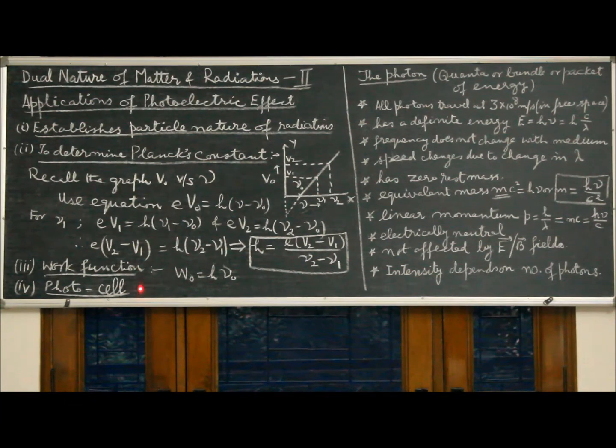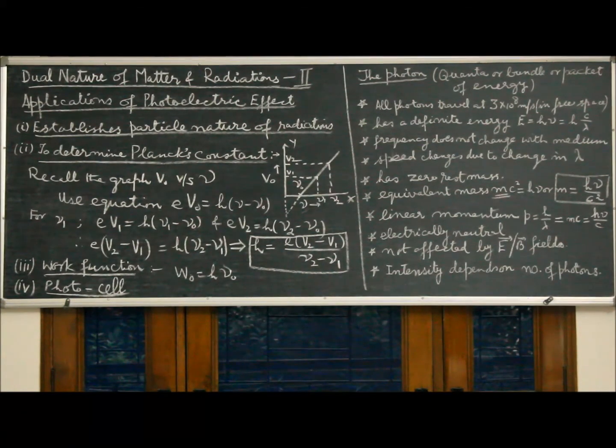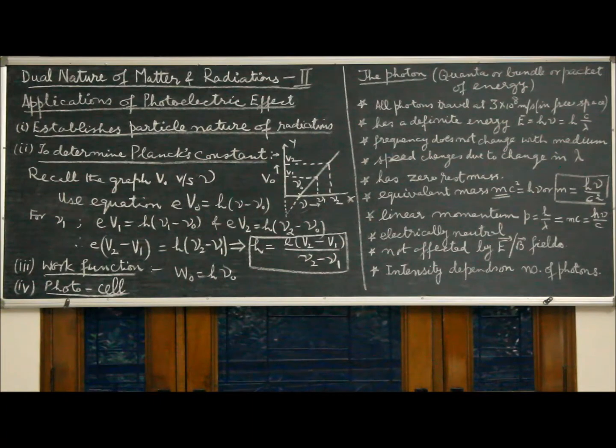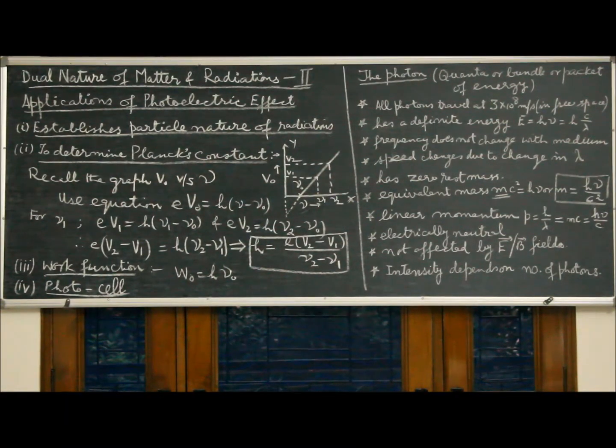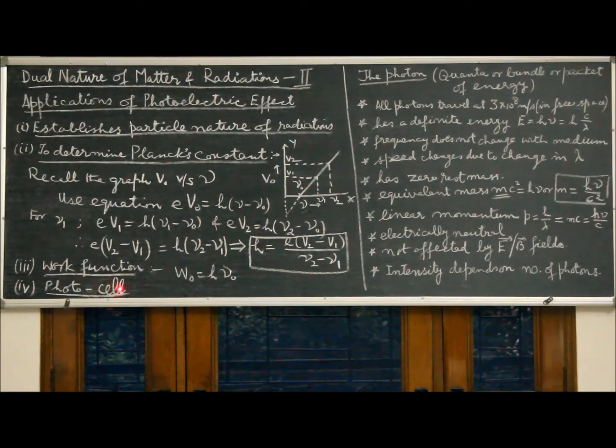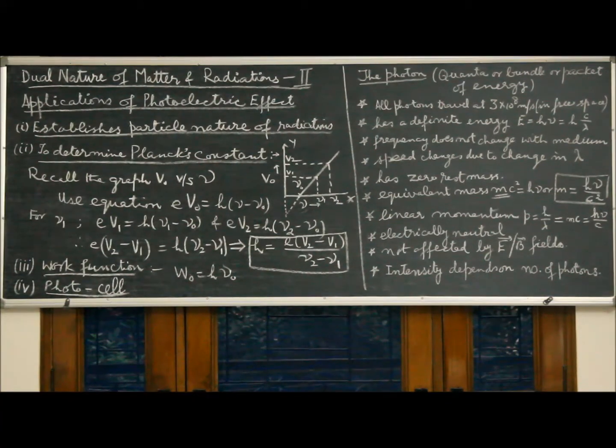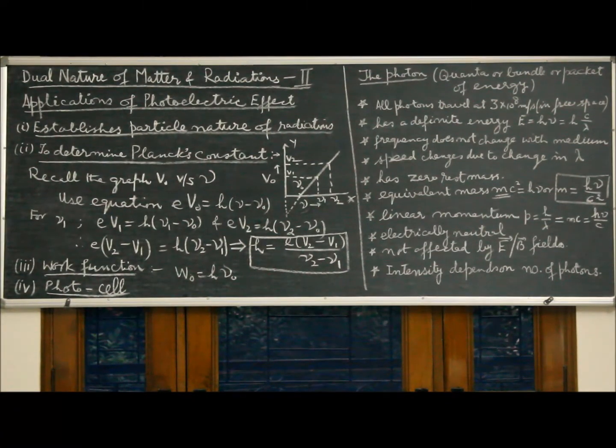Another important application is photocell which is used to convert light energy to electrical energy. In addition, this photocell finds a large number of applications in automation. It is used in solar panels, calculators, photorun or solar run watches, and finds a number of other applications in automation industry.